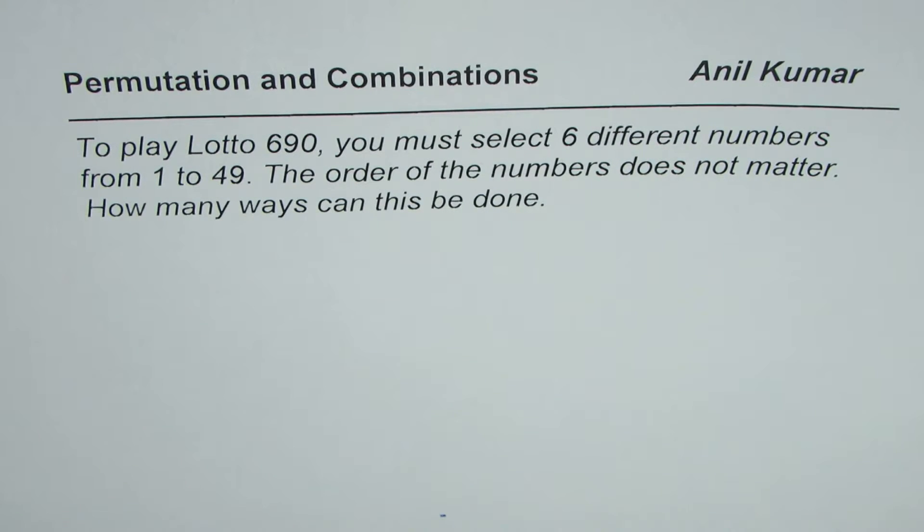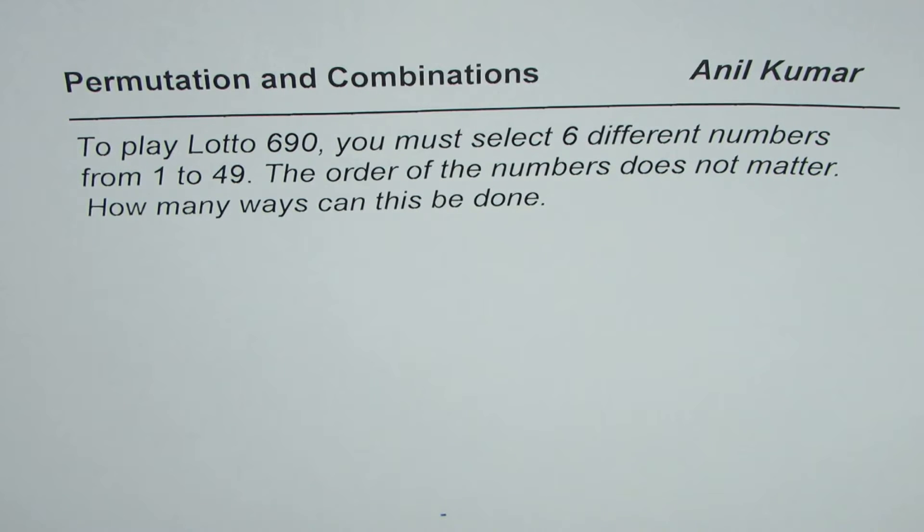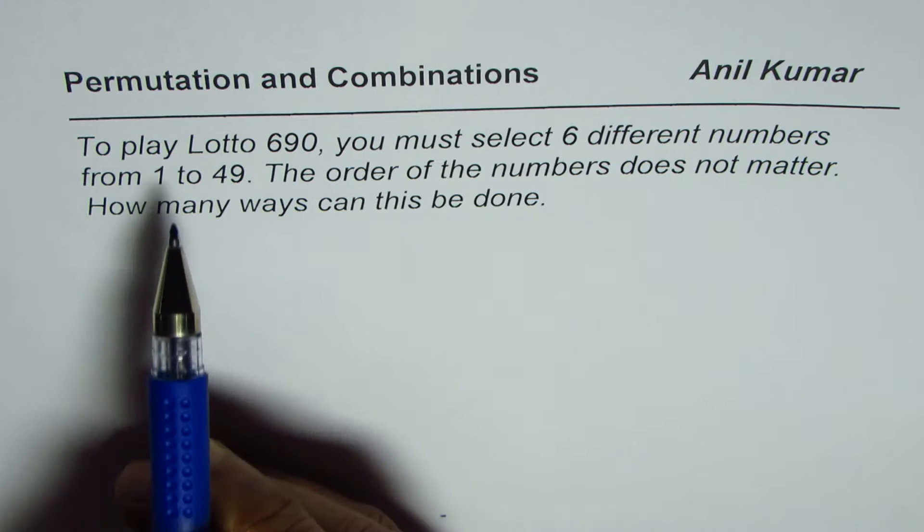I'm Anil Kumar and this question we are going to solve using both permutation and combination. The question here is, to play Lotto 690, you must select 6 different numbers from 1 to 49. The order of the numbers does not matter. How many ways can this be done?